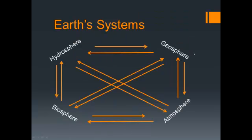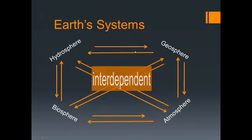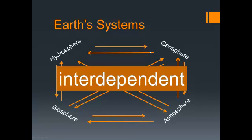An important term when thinking about Earth's systems is interdependence. You see all these arrows here. Interdependent means that they all rely on one another, that what happens to one will often affect the other, and they're all kind of connected in some way.